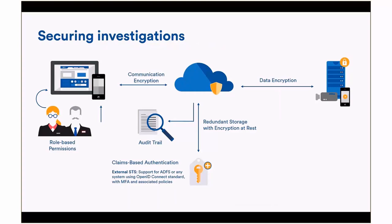When looking at the security behind this system: access is role-based with permissions determined by your role. All communication with the cloud-based service is completely encrypted, so data is not accessible to unauthorized parties. The data is also encrypted when stored in the cloud — not only during transmission but also at rest — and it's pseudo-anonymized, using what we call encryption at rest with redundant storage. Claims-based authentication ensures that access requests are handled through digital certification. There is a full audit trail so you can at any time report on who did what and when, to comply should you have a breach.